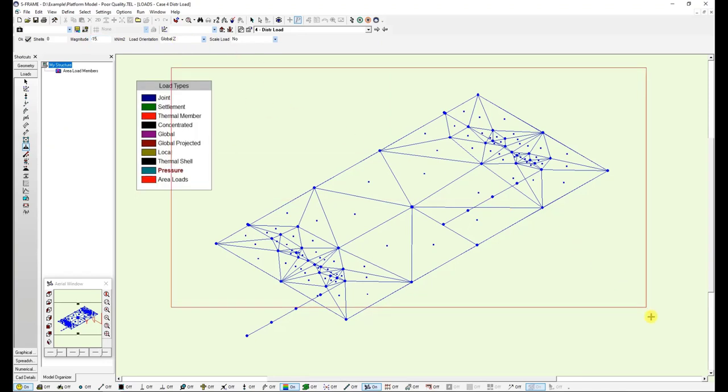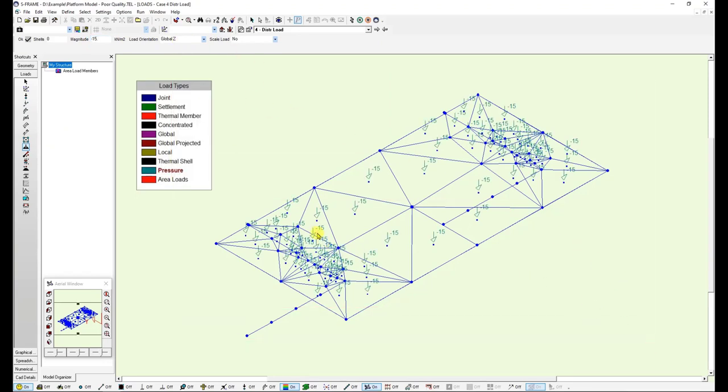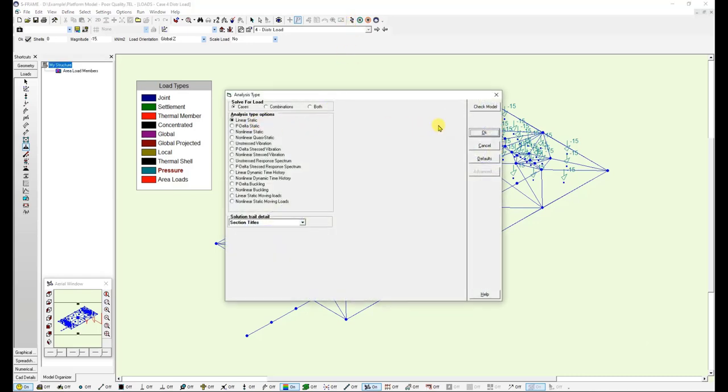I just need to click and drag over the wooden platform to apply this load to each one of my shells, and now I am ready to run a linear static analysis.